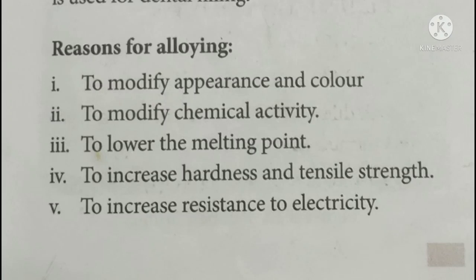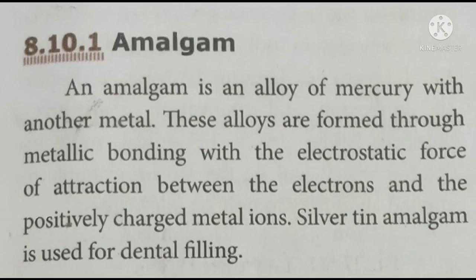An important term is amalgam. If we are using mercury for alloying, we call that composition an amalgam. An amalgam is an alloy of mercury with another metal. Mercury exists in liquid state. When this liquid mercury is fused or alloyed with any other metal, that composition is called amalgam. Alloys are formed by metallic bonding — the electrostatic forces of attraction occur between the electrons of mercury and the partially charged metal ions.